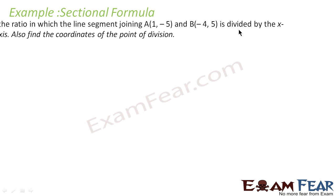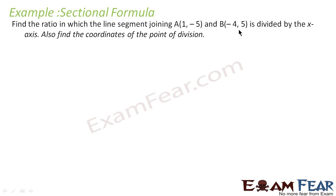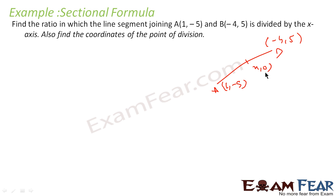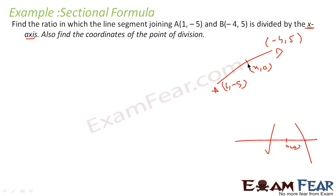Let us take one more example. Find the ratio in which the line segment joining A = (1, -5) and B = (-4, 5) is divided by the x-axis. Also find the coordinates of the point. Since the dividing point lies on the x-axis, it is of the form (x, 0). Let the ratio be k is to 1.